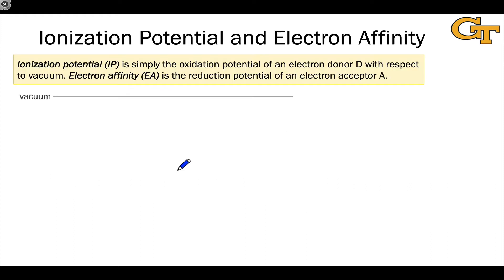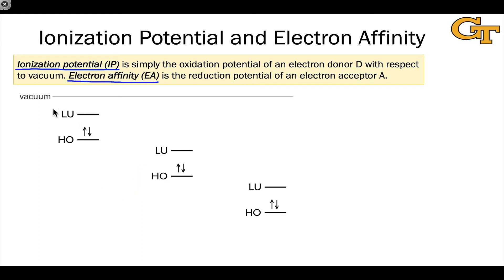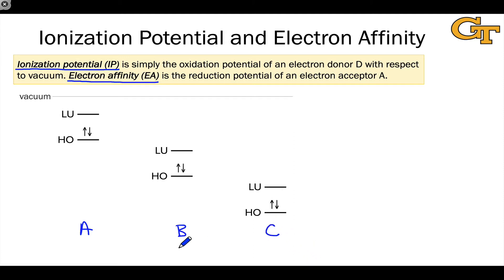To think about the propensity of a molecule to undergo oxidation or reduction, we need to define two quantities. The first is the ionization potential, abbreviated as IP, and the second is electron affinity, abbreviated as EA. To see the meanings behind these terms, it's easiest to look at some energy diagrams. Here are three hypothetical molecules — A, B, and C — with different orbital energies of their HOMO and LUMO.